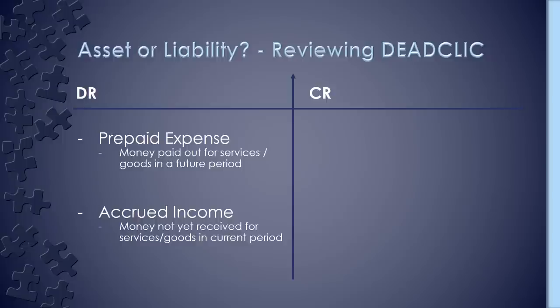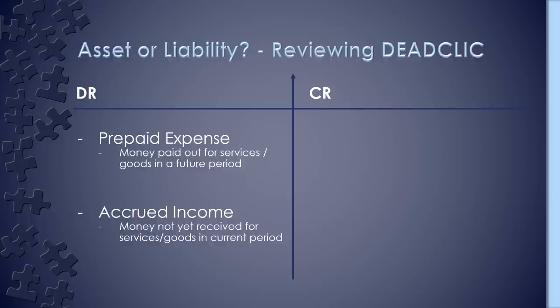Accrued income also sits on the debit side. This is money we haven't yet received from customers or haven't yet invoiced a customer for — it's effectively unrecorded receivables. Your trade debtors or trade receivables sit on the debit side because they are an asset, and it's exactly the same for accrued income. We just haven't raised an invoice yet, the customer hasn't paid us, so it hasn't been recorded in our income accounts. Therefore we accrue for it, and our accrued income account is an asset account, just like trade receivables.